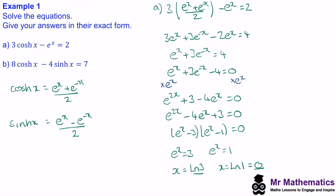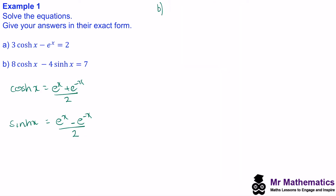Try to solve question B using a similar method — you can pause the video and we'll go through the worked solution when you come back. So again, we'll write cosh and sinh in terms of their exponential form. We get 8 lots of e to the x plus e to the negative x over 2, minus 4 lots of e to the x minus e to the negative x over 2, and this is equal to 7.